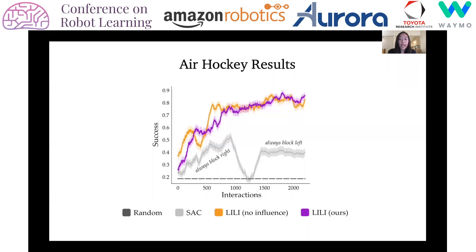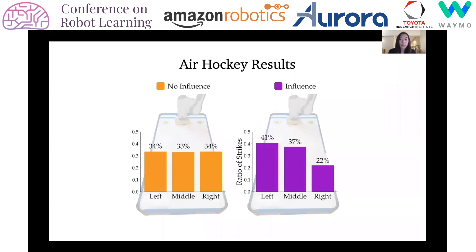The full version of LILY has a similar success rate as LILY without influence. But if we look at how frequently the opponent fired left, middle, and right, we see that LILY with influence leads its opponent to fire left the most often — 41% of the time — while without influence, the distribution over strategies is uniform.